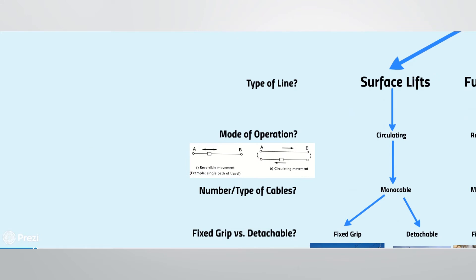Type of line covers whether the ropeway pulls a passenger on the ground, pulls carriers on a track, or suspends carriers in the air. There are two modes of operation: reversible and circulating, shown in the diagram from Mr. Artur Doppelmayr. Reversible ropeways can be compared to a playground seesaw — when one carrier is at the top, the other is at the bottom. This oscillating motion is often called jig-back operation.